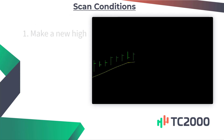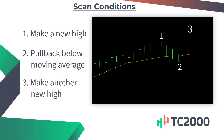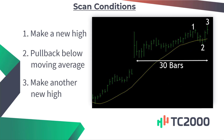I want to find stocks that make a new high, then pull back below a moving average, and then make another new high. I want all this to happen within the last 30 bars. This should be simple enough, and it is using a flex condition.